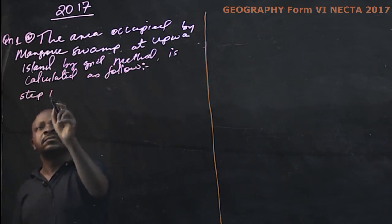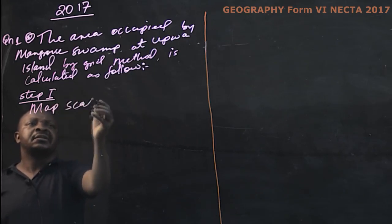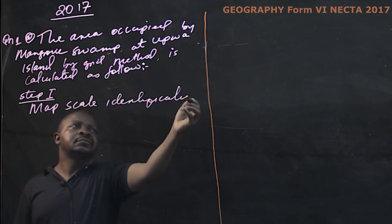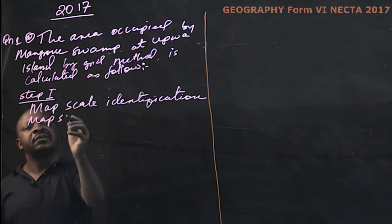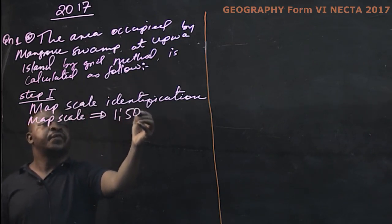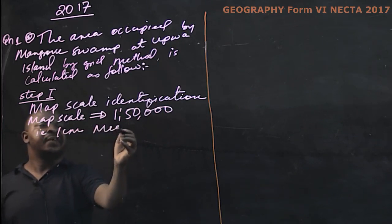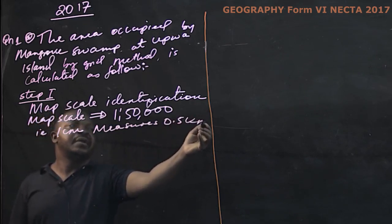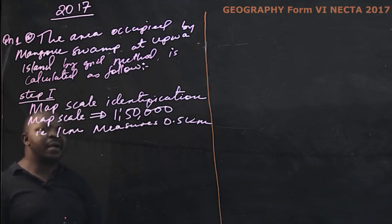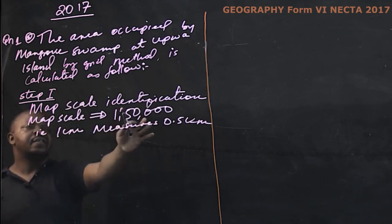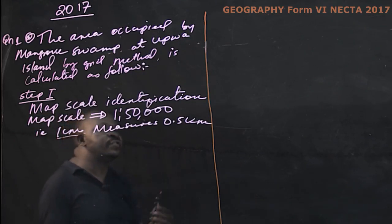Step one: map scale identification. We find the area of mangrove swamp starting with the map scale, which is 1 to 50,000. That means 1 centimeter measures 0.5 kilometer. In this first step, we are required to identify the scale — the relationship between distance on the map and the actual area represented.